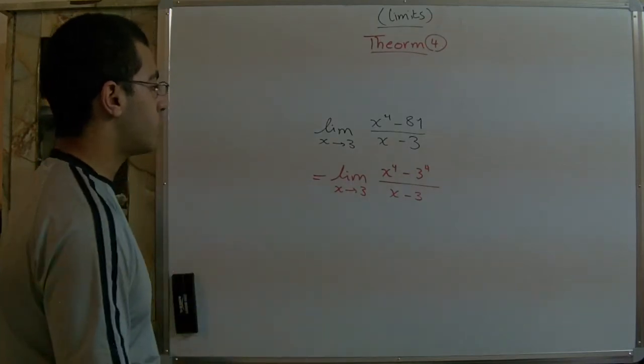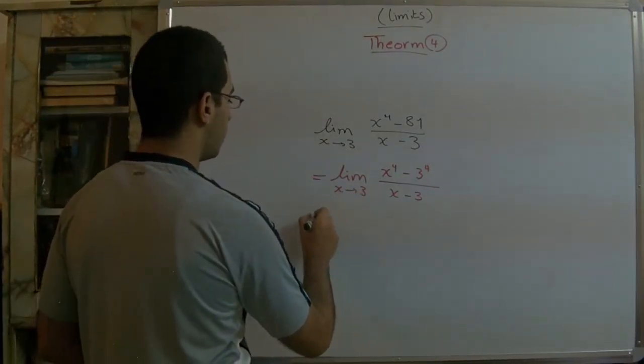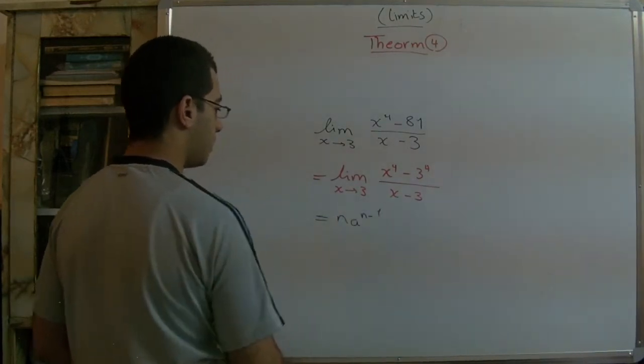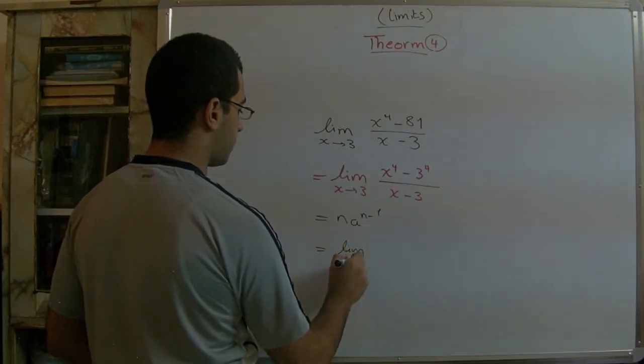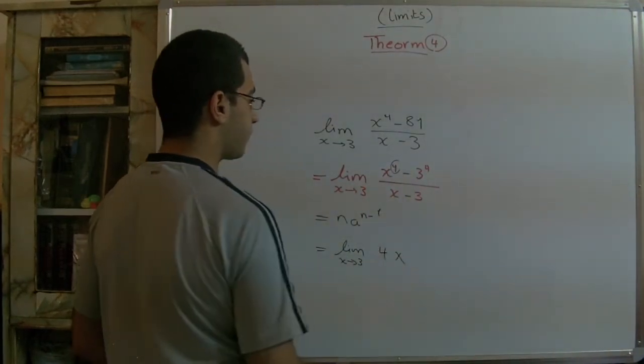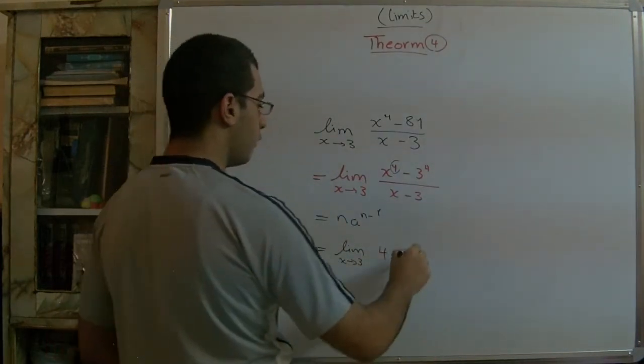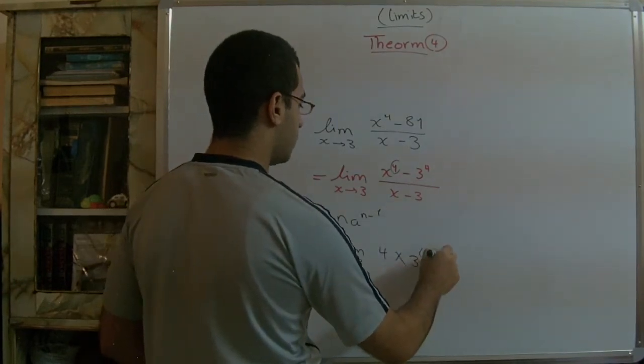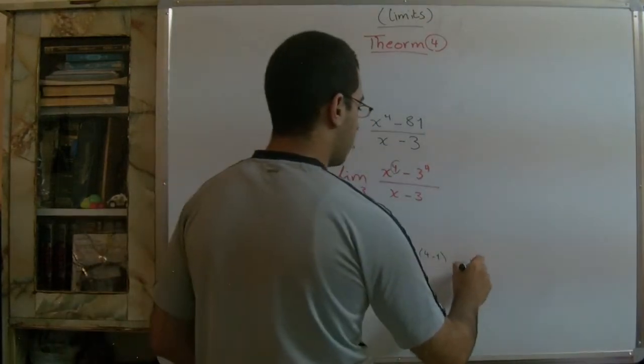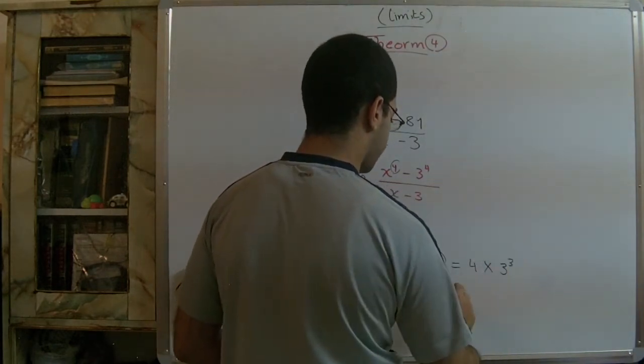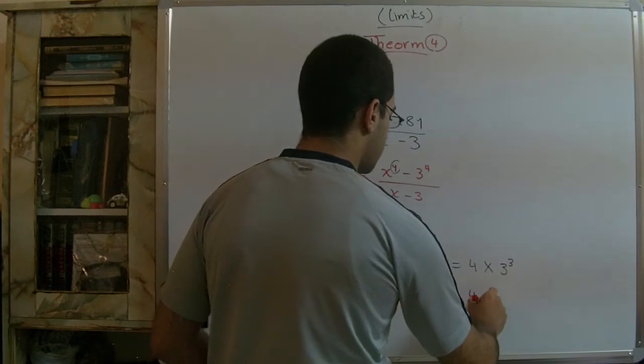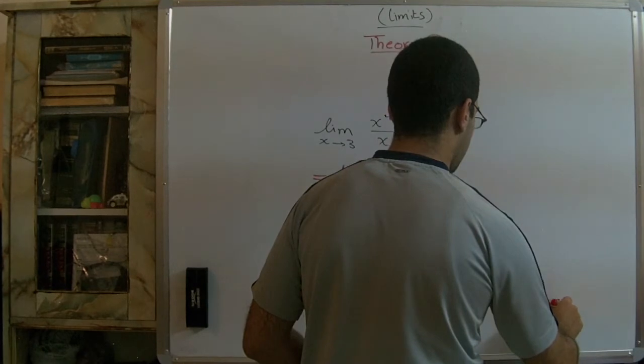And here we get the formula which we have just mentioned before. So the answer will be n·a^(n-1) equals limit x approaches 3. Here we get n equals 4 and a equals 3 of power n - 1, which is 4 - 1. So the answer equals 4 times 3^3.